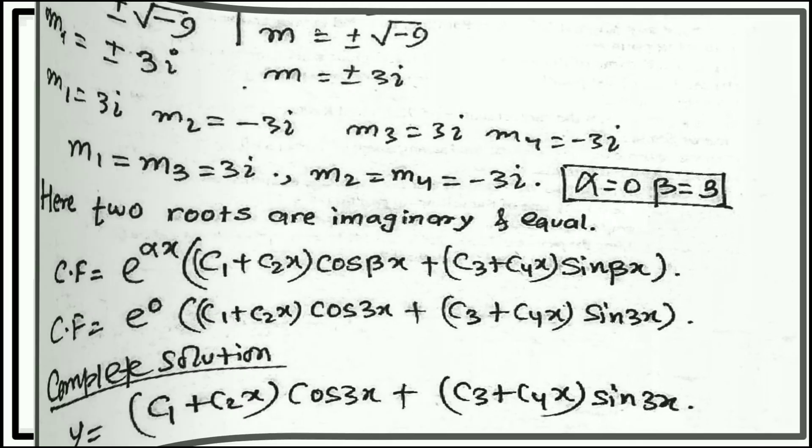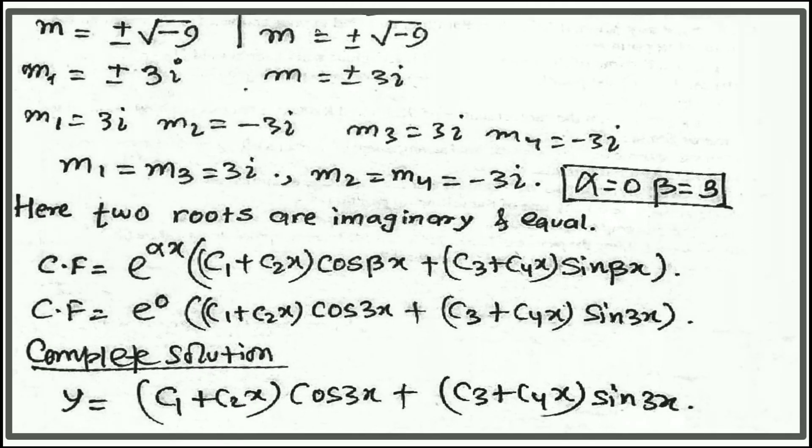Here we have m₁ is equal to 3i, m₂ is equal to 3i, m₃ is equal to 3i, and m₄ is equal to minus 3i. And alpha is equal to 0 and beta is equal to 3. Here two roots are imaginary and equal.